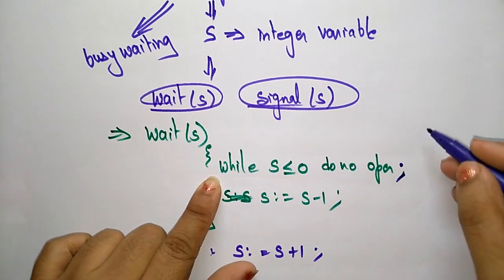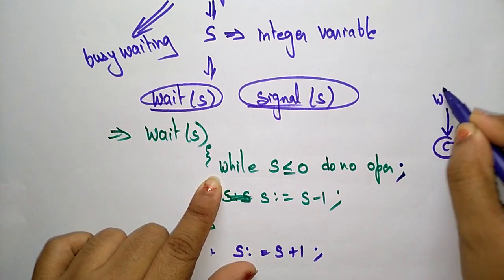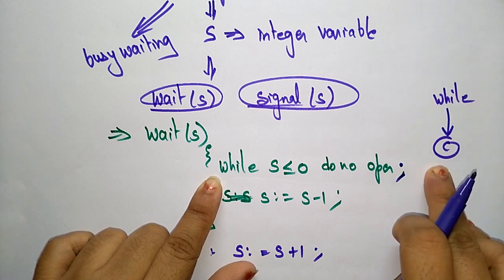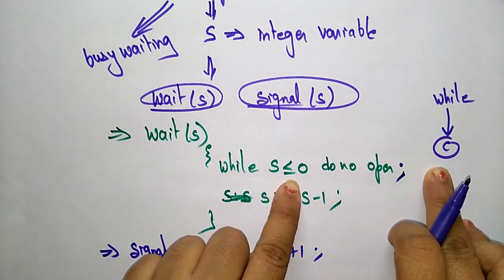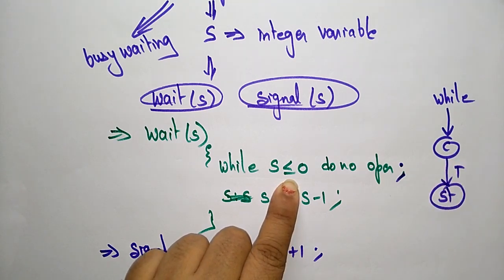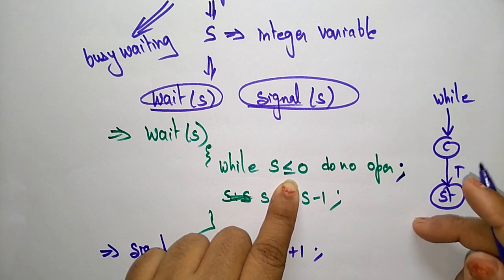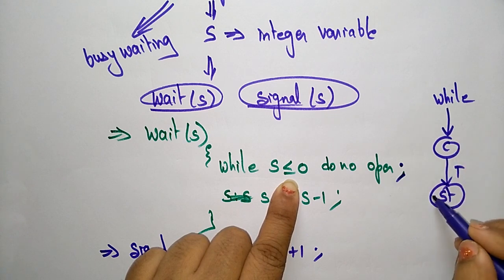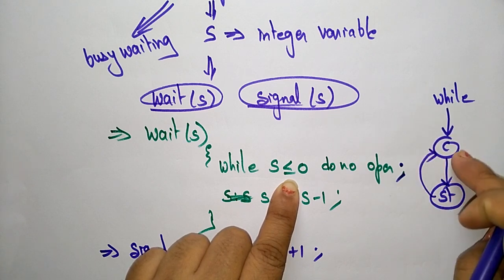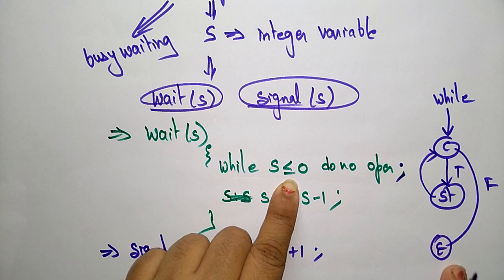The while loop first checks the condition S less than or equal to 0. Whenever this condition is true, it enters the statement and executes until the condition remains true, repeatedly checking. If the condition is false, it exits from the loop. This is how the while operation works.